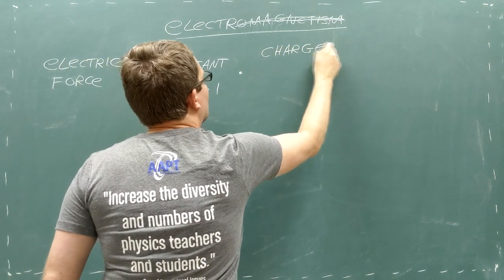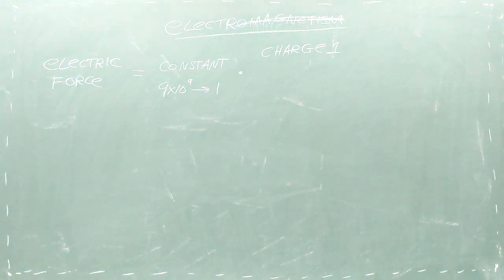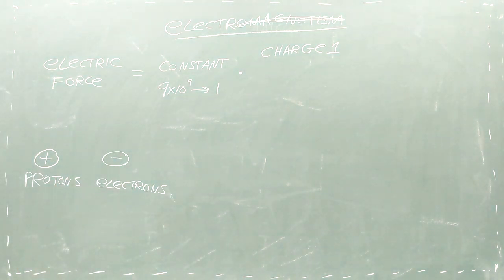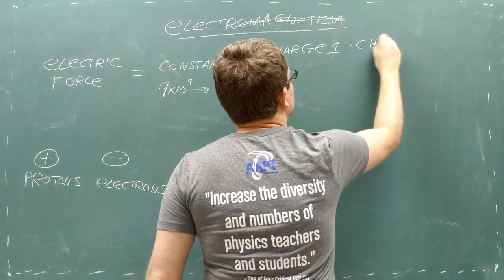Second, there's the charge of the object experiencing the force. Charge is a fundamental property of matter, just like mass. However, unlike mass, charge comes in two types: positive and negative. We'll label this first object with a 1.